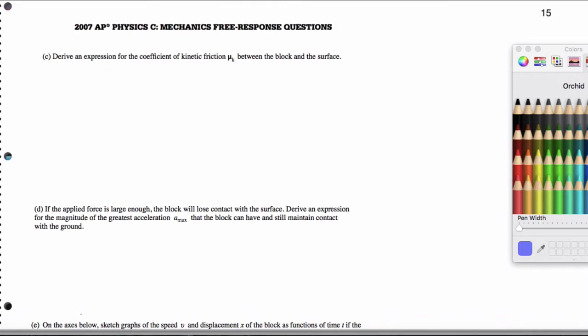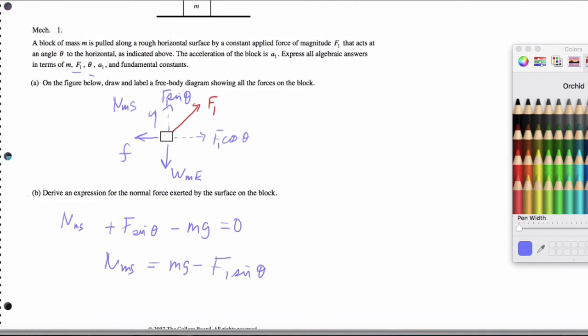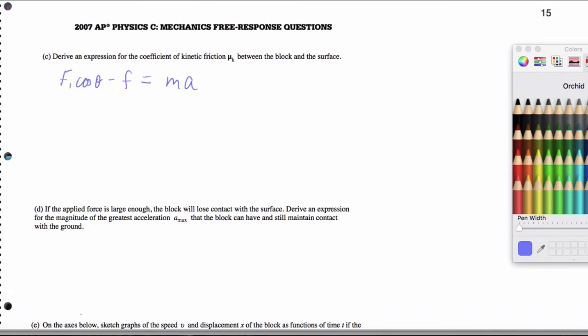And then for part C, it says derive an expression for the coefficient of kinetic friction between the block and the surface. So let's write down the horizontal force equation. That's going to be F1 cosine theta minus the friction equals M times A. And let me make sure I have that acceleration. It is labeled as A1. And we already know that our normal force is given by mg minus F1 sine of theta.